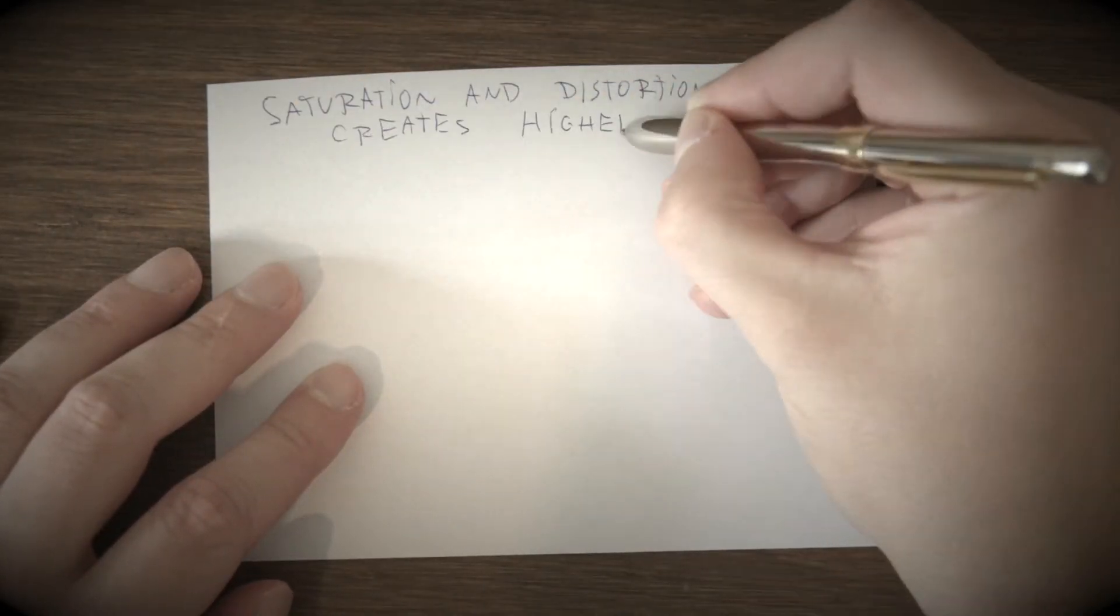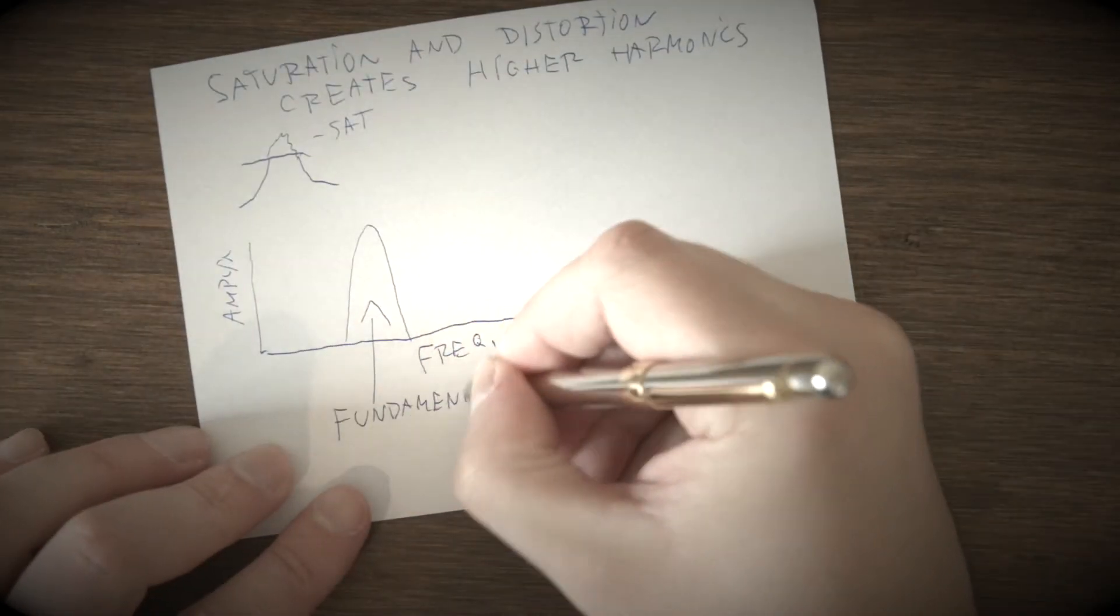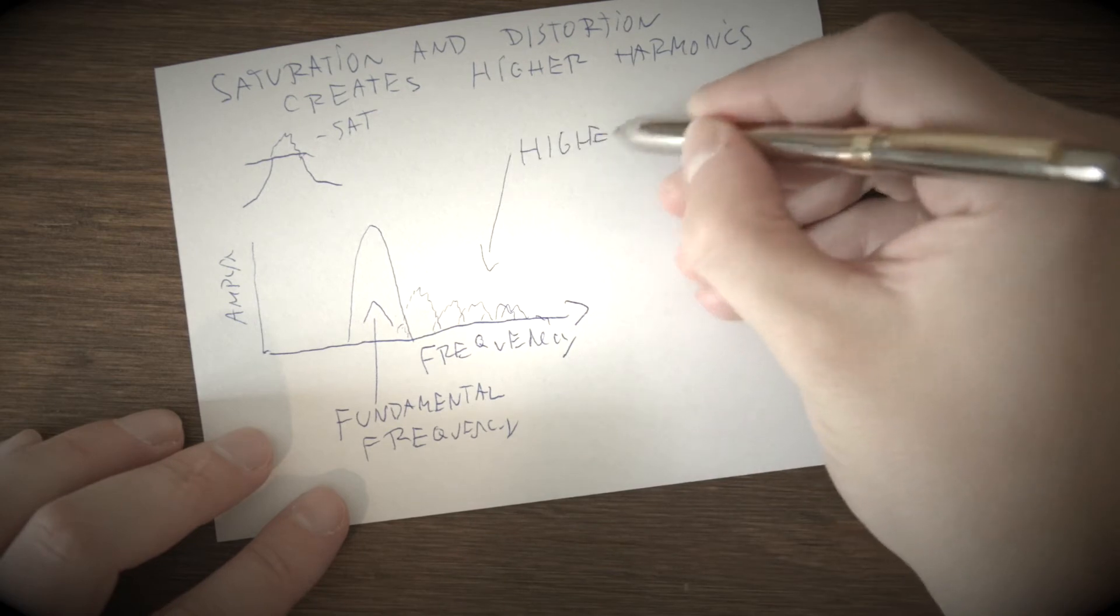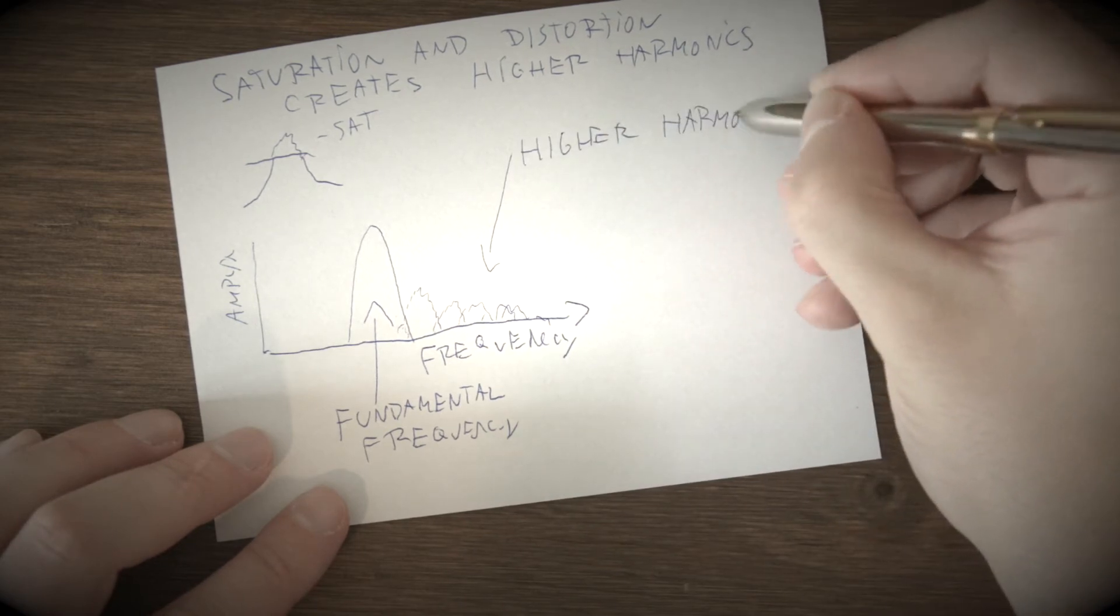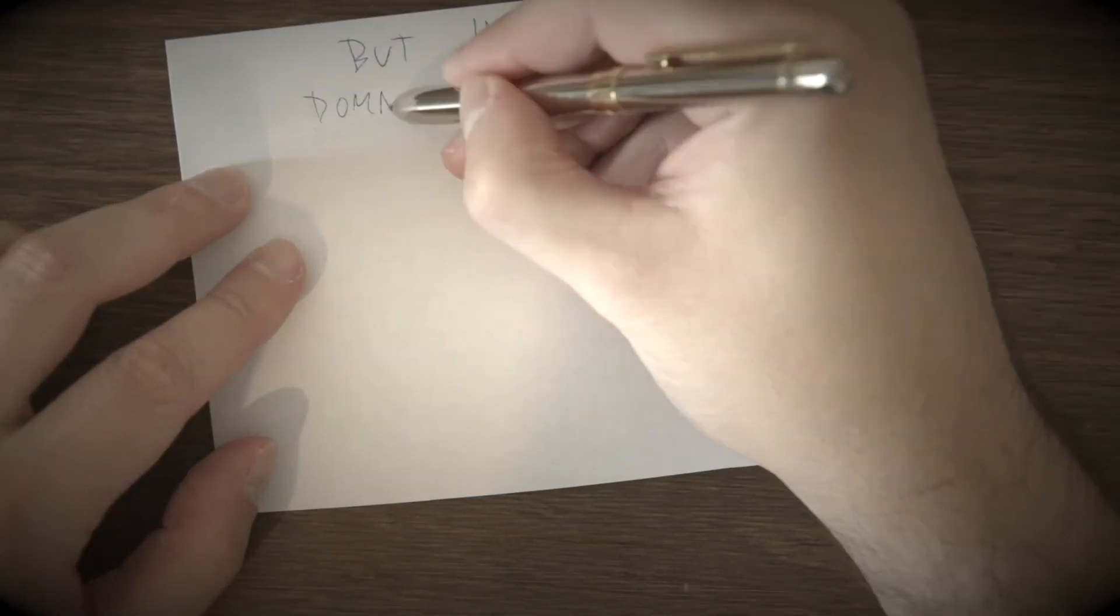Saturation and distortion creates phenomenon of higher harmonics, which is also described as color of sound. Simply saturated signal automatically creates very quiet multiples of the original signal at higher frequencies. This is physical law.